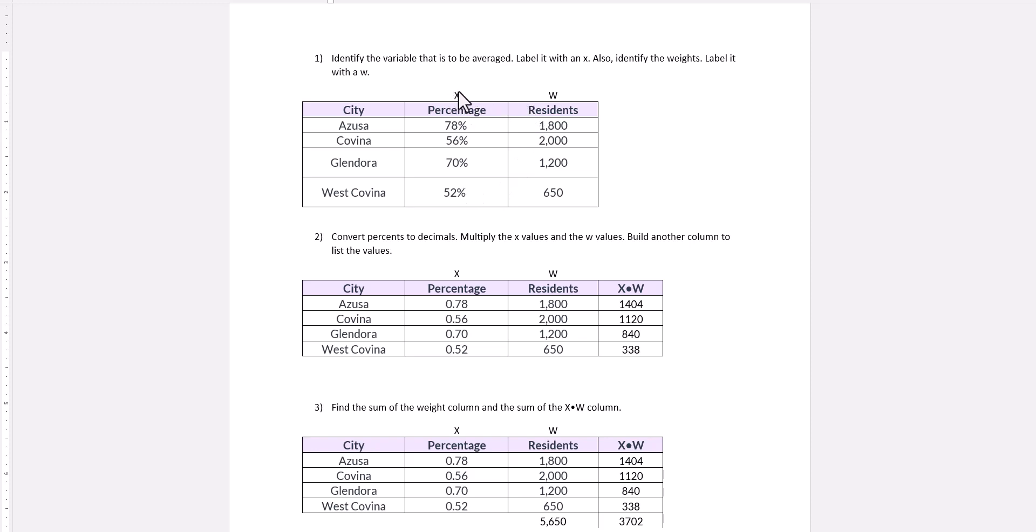We label this with the X. The weights have to be the residence, and we're going to label that column with the W.